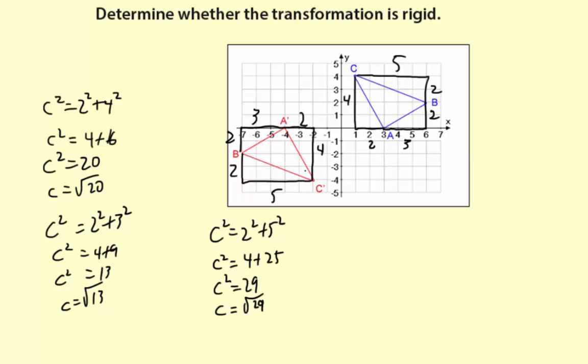So it turns out that all three pairs of corresponding sides have the same measure. That means you have a rigid transformation.